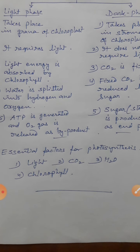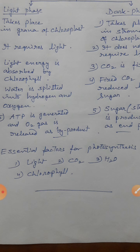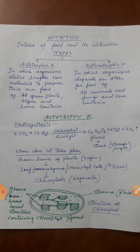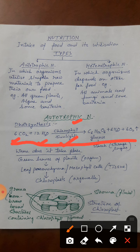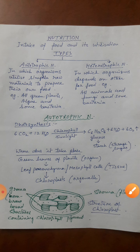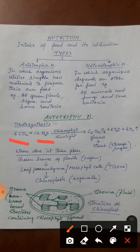Then comes: what are the essential factors for photosynthesis? To photosynthesis ke essential factors hain: light, carbon dioxide, water, and chlorophyll — ye charon essential factors hain. Photosynthesis ke reaction mein bhi aapko yeh sab milega: carbon dioxide, water, chlorophyll, sunlight — these are the essential factors. In charon mein se koi bhi ek absent hoga to photosynthesis nahi hoga. And what are the raw materials of photosynthesis? Nature se plant kya kya leta hai — carbon dioxide leta hai aur water leta hai. Raw materials for photosynthesis: carbon dioxide and water.